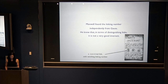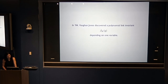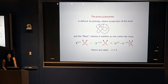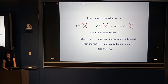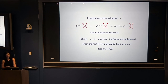Maxwell apparently found the Gauss linking number independently, and noted that it's not a very good invariant. In 1984, Vaughan Jones discovered a polynomial link invariant depending on one variable. The Jones polynomial is defined by picking a planar projection of the knot and a skein relation satisfied as you untie the knot. Taking N equal to 2 gives the Jones polynomial; other values of N also lead to knot invariants. In particular, taking N equal to 0 gives the Alexander polynomial, the first known polynomial knot invariant, dating to 1923.